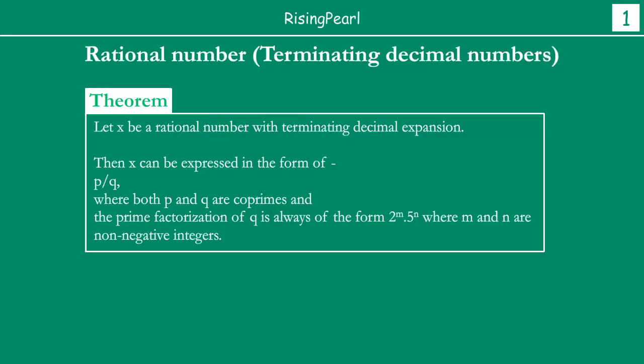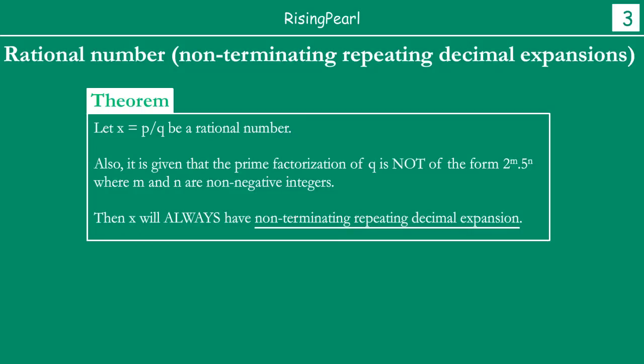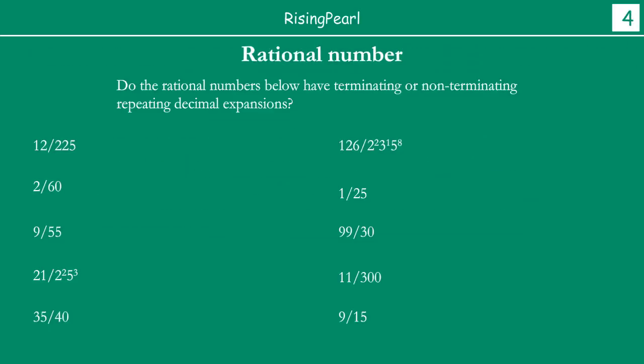Now, I'm not going to repeat the theorems again, but we specifically looked at three theorems. As and when we solve the problems, we are going to come back and revisit these theorems. We essentially had Theorem 1 and 2, which talked about when we have a rational number with terminating decimal representation or expansion. And then we had the third theorem that talks about when we will have non-terminating but repeating decimal expansion for a rational number.